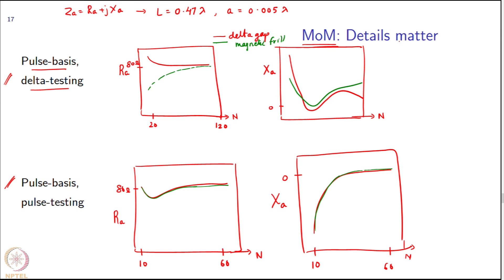Usually when students learn CEM for the first time they think pulse basis delta testing, if you have done that is good enough. But this is telling you that you have done all the hard work in getting till there, just go all the way and do something little bit more accurate, you will get this. You will get even faster convergence. For example, in the pulse basis delta testing you had to go to nearly 120 N in order to get the resistive part to converge. Here within 60 elements you are able to get convergent results, maybe even less than that.